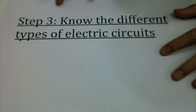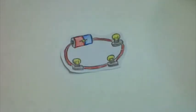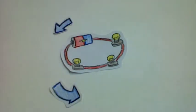Step 3. Know the different types of electrical circuits. There are two main types of electrical circuits. Here is a series circuit. In a series circuit, all the parts of the electrical circuit are connected in one path.